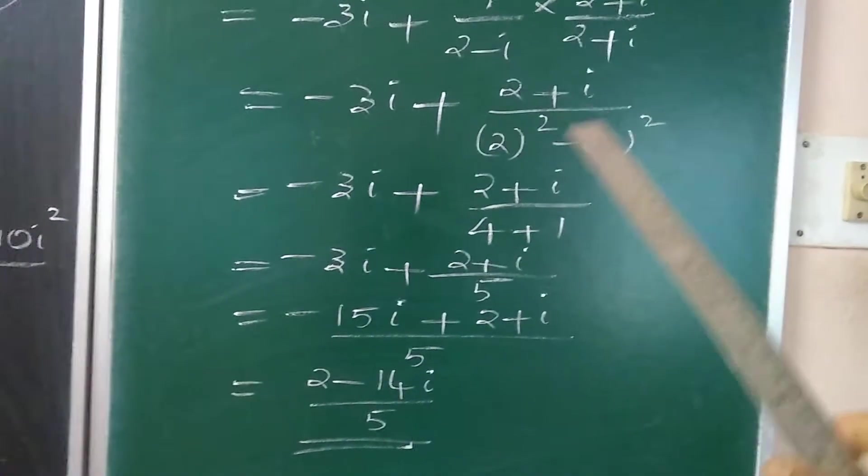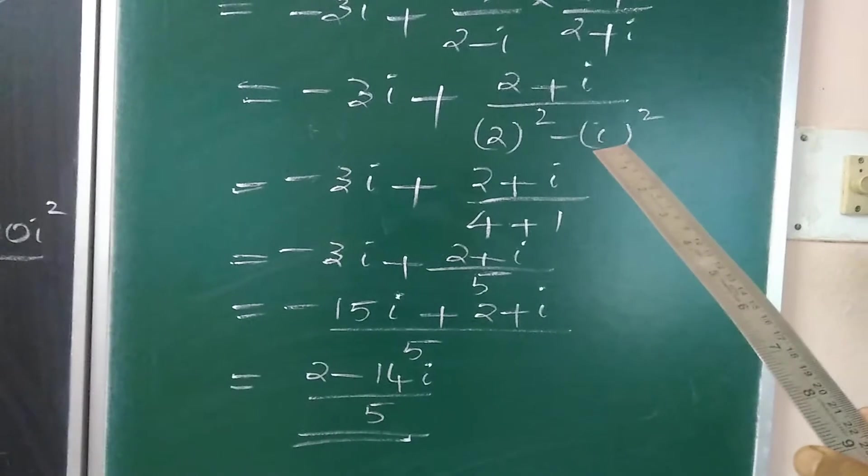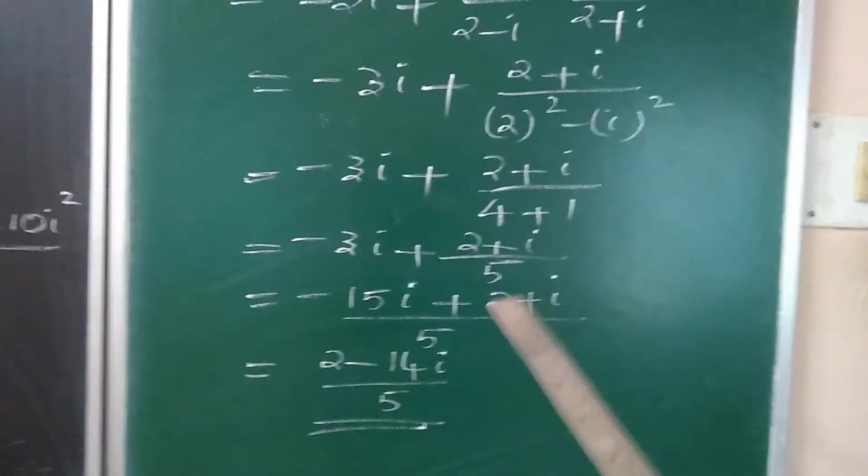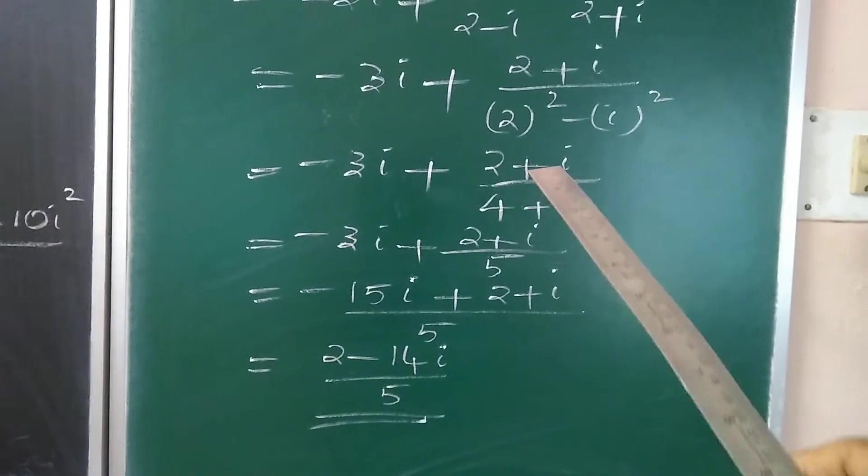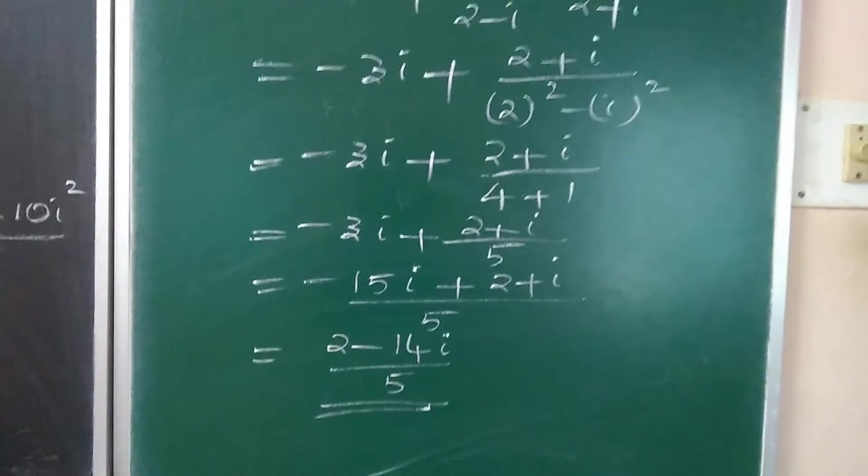Minus 3i plus 2 plus i divided by 4. This is minus i square. It becomes plus 1. So minus 3i plus 2 plus i divided by 5.